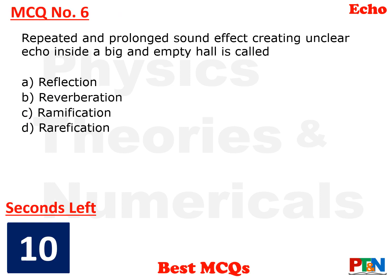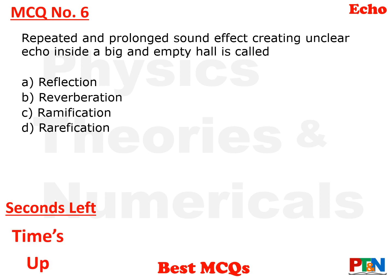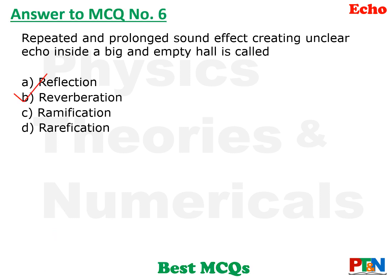Next MCQ: Repeated and prolonged sound effect creating unclear echo inside a big empty hall — what is that effect called? The options include reflection, reverberation, and ramification. The answer is reverberation. There may also be similar theory questions on waves used by bats, on sonar, and on medical uses of echo, so be prepared for those questions.